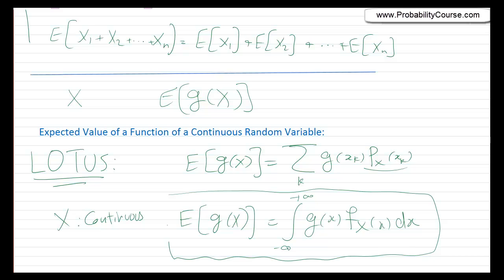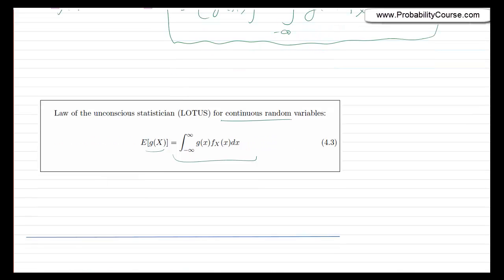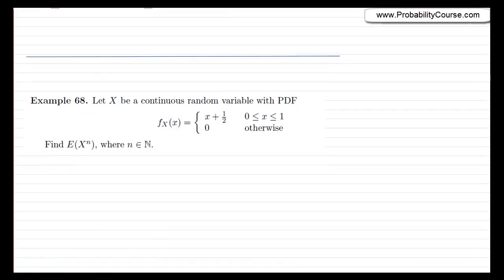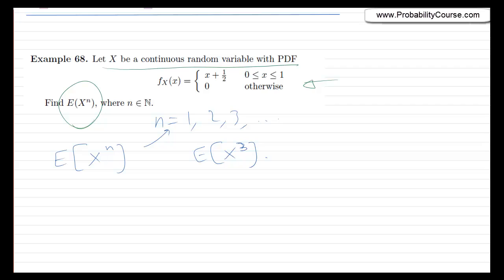So that's the LOTUS formula for continuous random variables. If X is a continuous random variable, then the expected value of a function g(X) is given by this integral. Let's look at an example. Let X be a continuous random variable with the following pdf, and the question is to find the expected value of X^n for any natural number n. So n could be 1, 2, 3 — you need to find E[X^n] for any n. I suggest you solve this problem before watching the rest of the video.